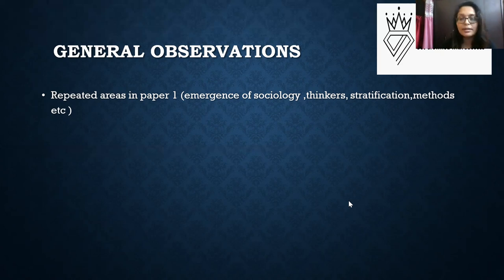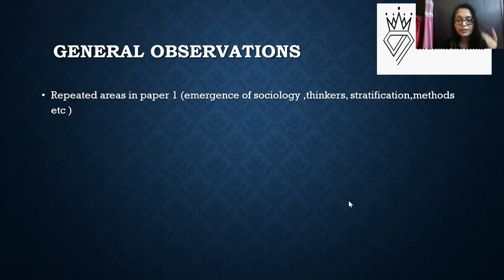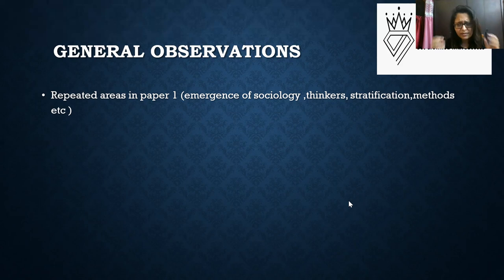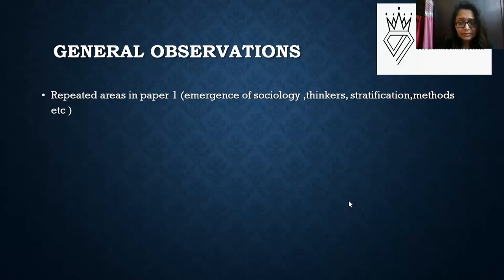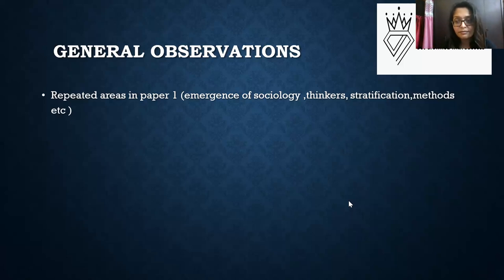Questions on thinkers — Durkheim, Marx, Weber — are very standard. If you have done these thinkers carefully, you've definitely done well. Very standard questions include Weberian bureaucracy and why it is a rational cage, Durkheim's division of labor, Marx's mode of production. You also have questions on stratification and social mobility, Pareto's theory of circulation of elites, religious revivalism, cult, and dependency theory — again a very favorite area of UPSC.